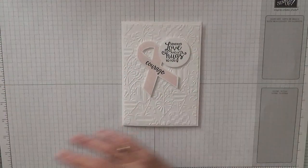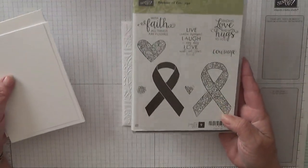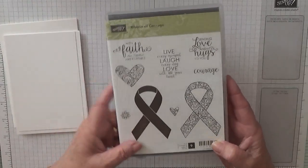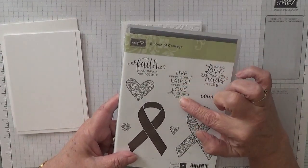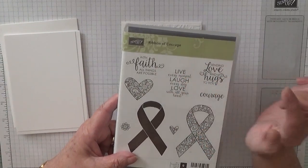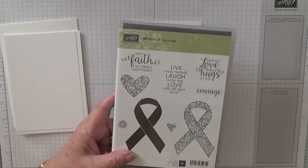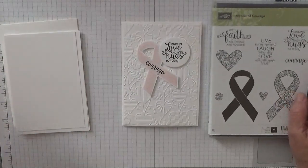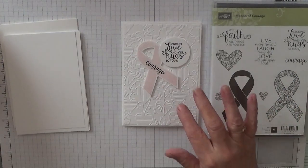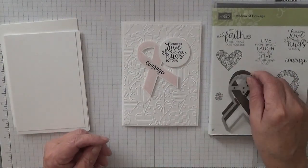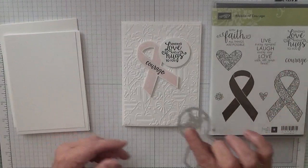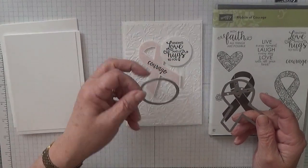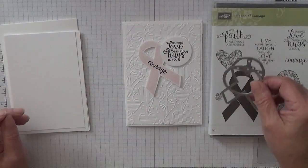To make this card I've used Ribbon of Courage, and we're just using that blank ribbon. We're also using for the inside the 'live every moment' stamp, and the outside is 'sending love and hugs to you.' We'll be cutting them out using the ribbon die and number three circle for the sentiment from the layering circles.